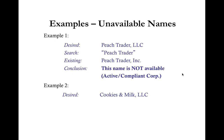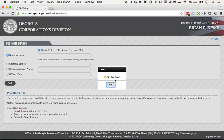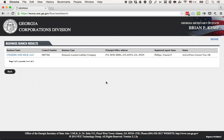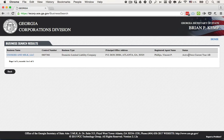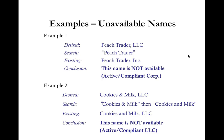Another unavailable example: desired LLC name is Cookies and Milk LLC. We first search using the ampersand symbol — no data found. Then we search Cookies and Milk spelled out, and we find Cookies and Milk LLC with a status of active. Just using the ampersand symbol instead of the word 'and' does not make the name unique. Therefore, this name is not available because there is already an active and compliant LLC by that name.